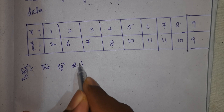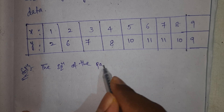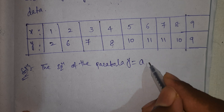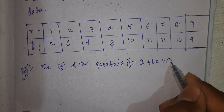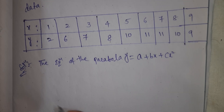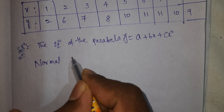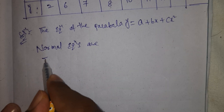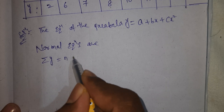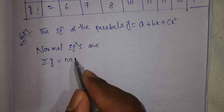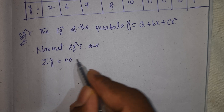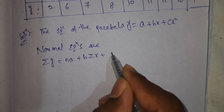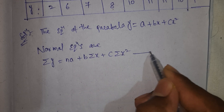The equation of the parabola is y equal to a plus bx plus cx squared. The normal equations are: summation y equal to n times a, plus b times summation x, plus c times summation x squared. This is equation number 1.